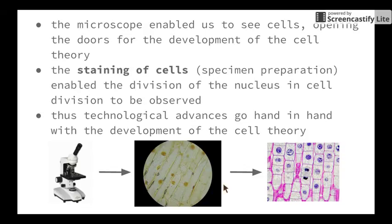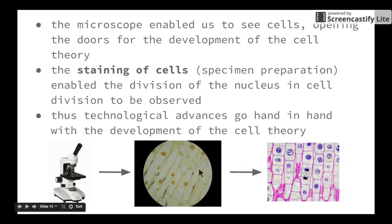Beyond that, we moved on to the understanding that we could stain or colour the specimens in order to be able to look at them in much more detail. We can see in this picture here the cell wall, the cell membrane, and a very simple image of the nucleus. However, with these staining techniques, we could then break it down and actually see the different things that are happening inside the nucleus of each of the cells.